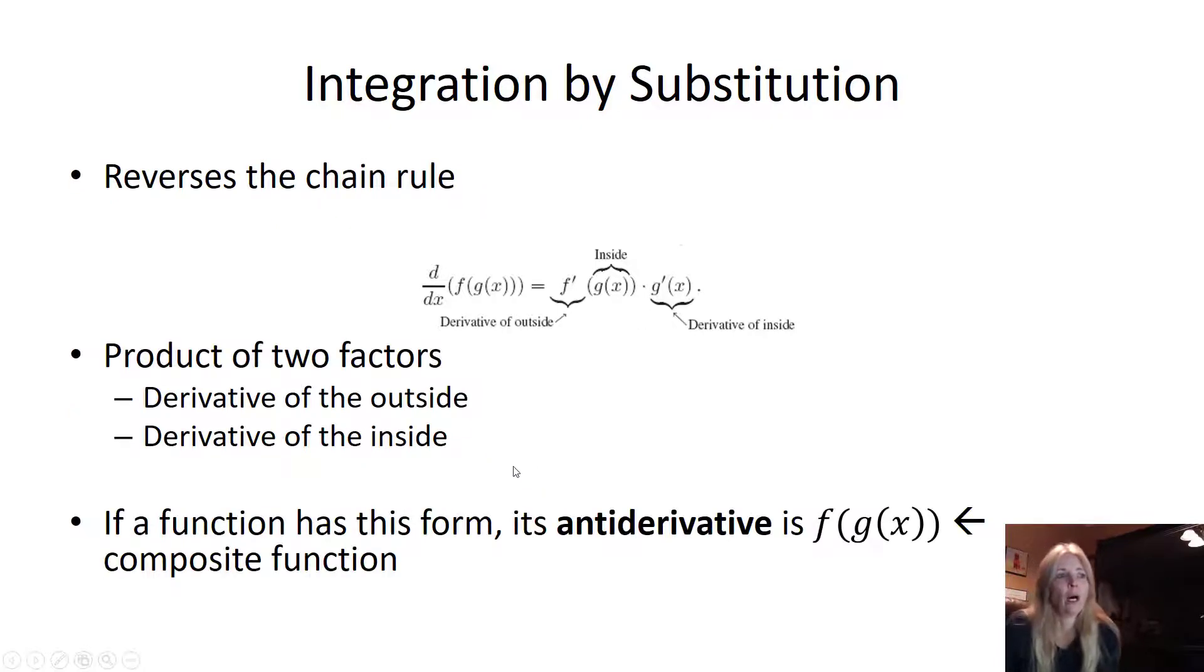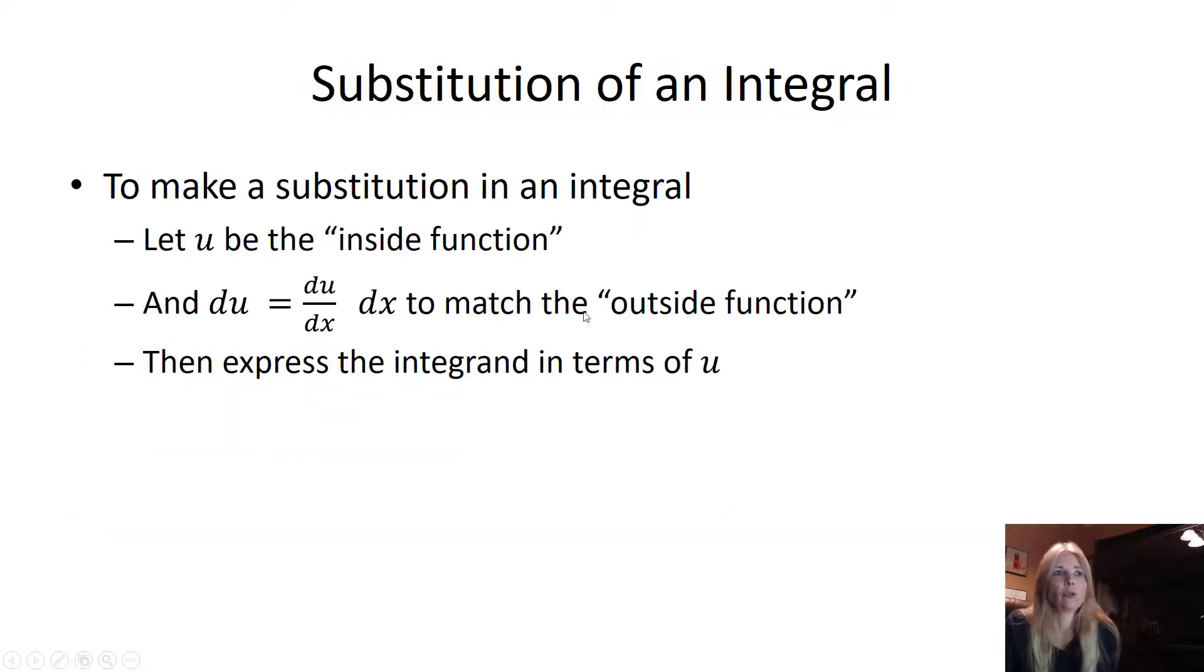So if a function has this form, its antiderivative is, working backwards, the composite function. So to make a substitution in an integral, you can use any variable that you want, but typically they call this u substitution, and they use the letter u. So let u be the inside function.